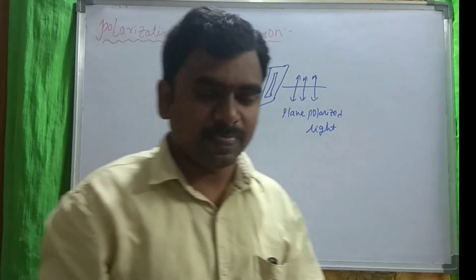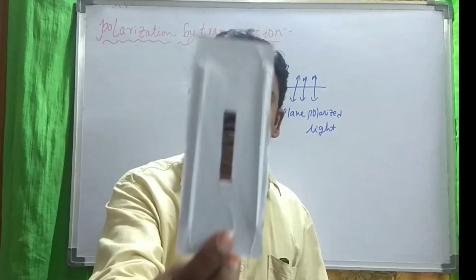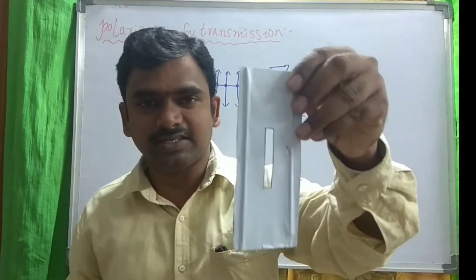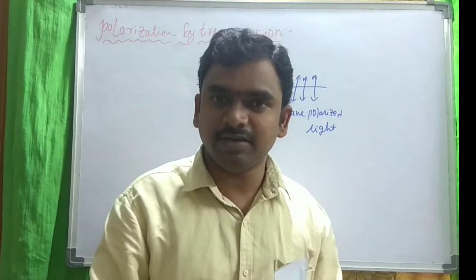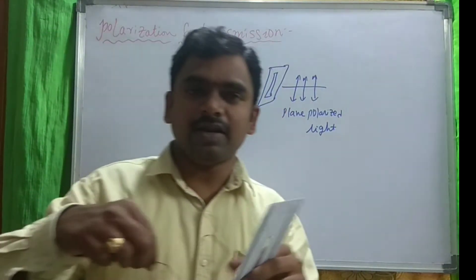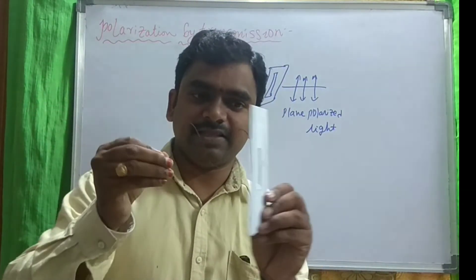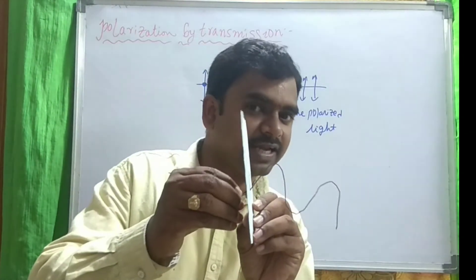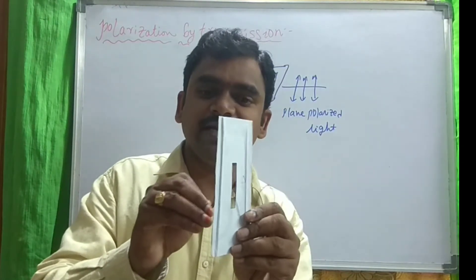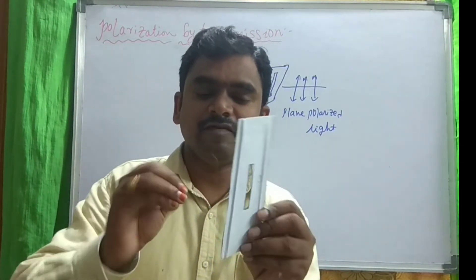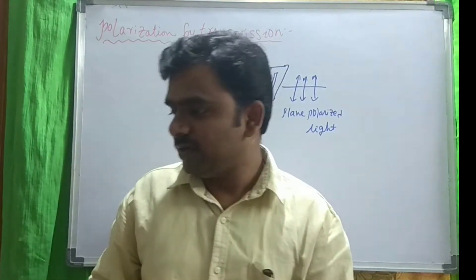By using some equipment, I would like to show you — just a small demonstration using slits. This is our wave. If the light is passing like this, then only it is coming into the second one. That means on the opposite side. So if the light is not aligned like this — for example, if the light is going like this — it won't allow. Yes.